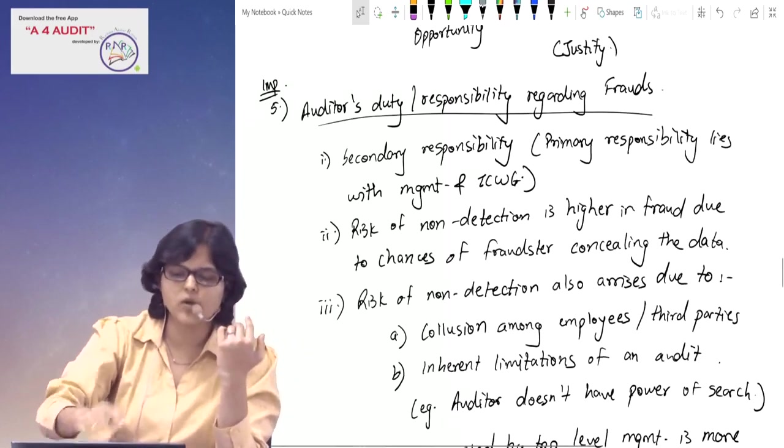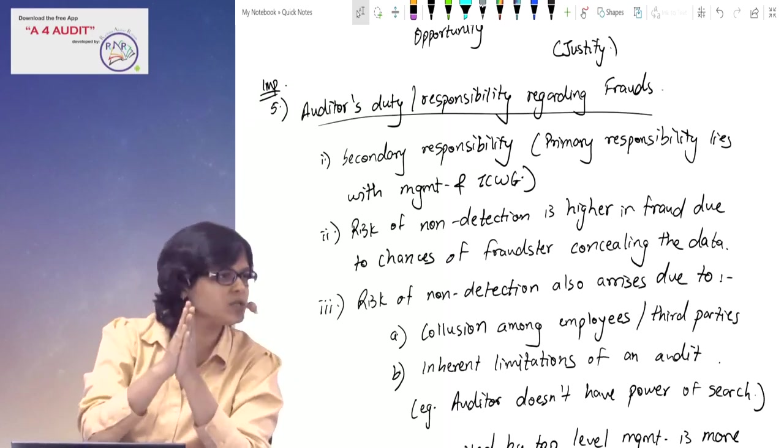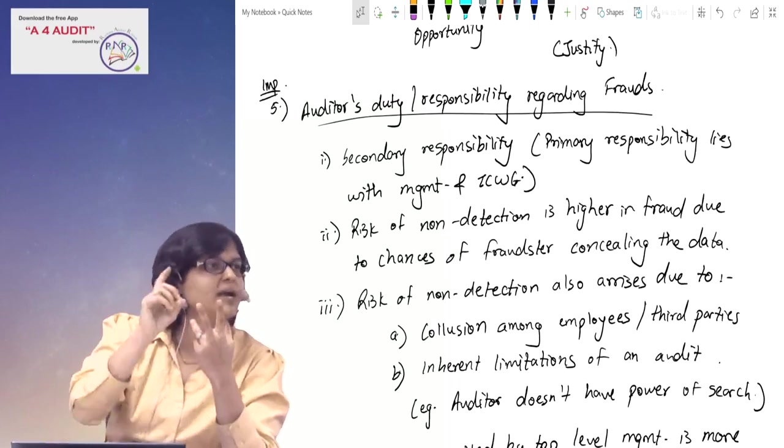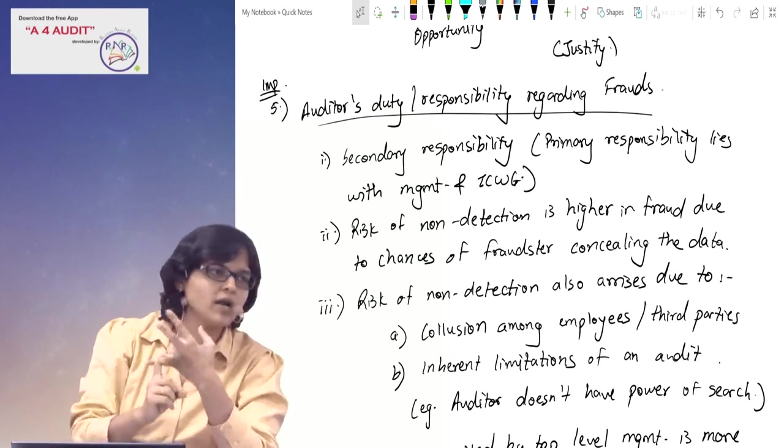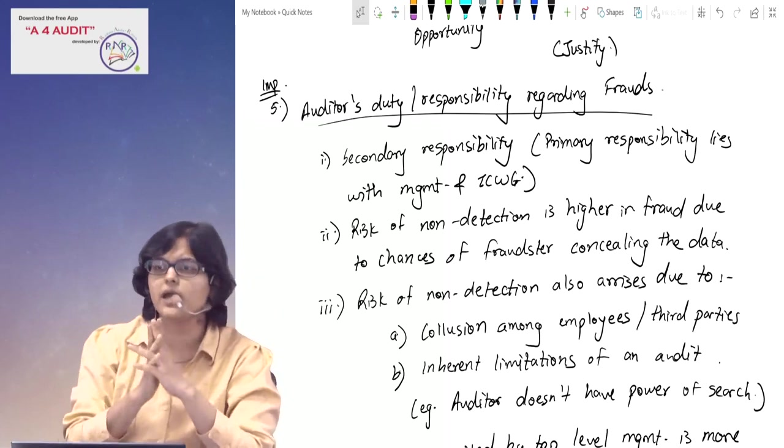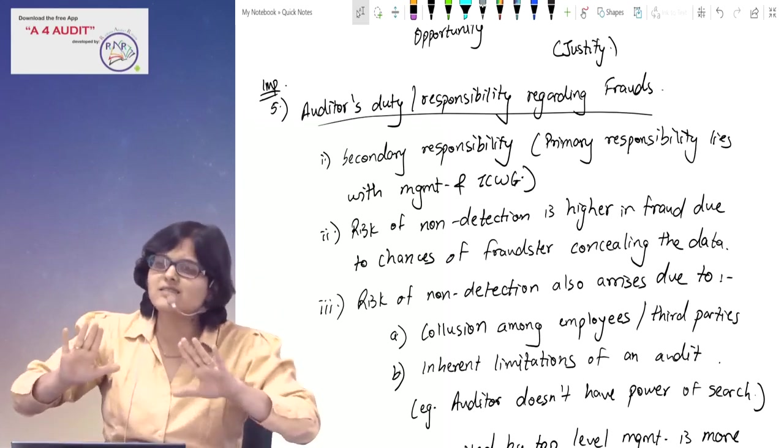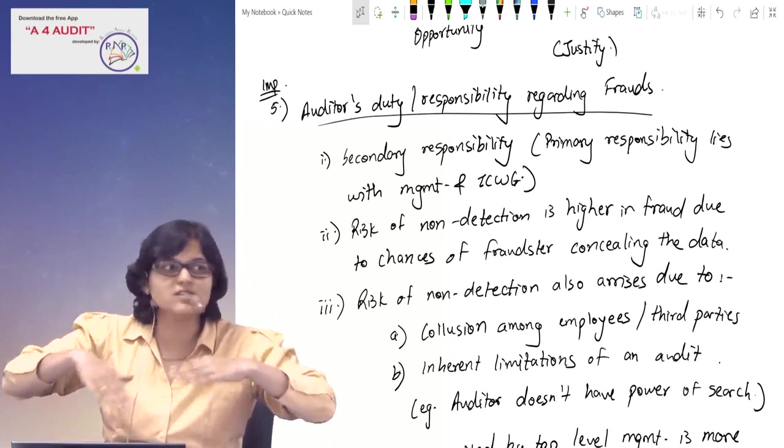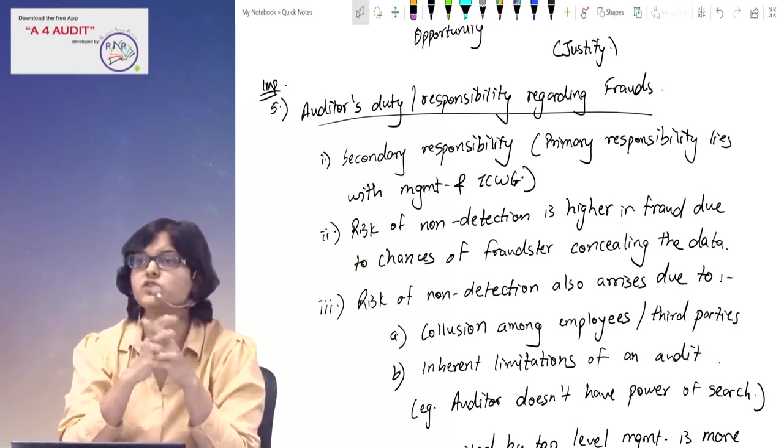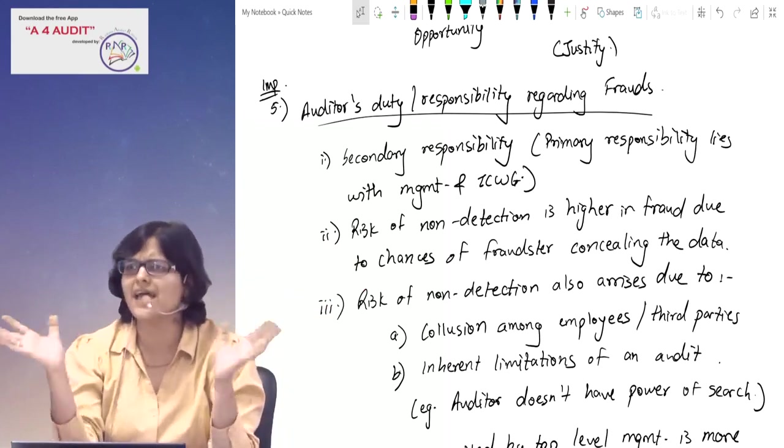After that, we have said, what is the primary responsibility? Who is responsible primarily? Management and TCWG. Secondary - the auditor. What is the auditor's responsibility? To obtain reasonable assurance that financial statements are free from material misstatements due to frauds or errors.